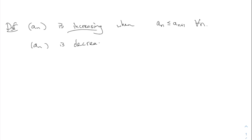Decreasing is similar: a_n is decreasing when a_n ≥ a_{n+1} for all n — each term is bigger than the one that follows it. If your sequence was just the same number repeated, that is both increasing and decreasing. A constant sequence is both increasing and decreasing. It's a little weird, but true — like how later we'll talk about sets that are both open and closed. These words don't always act the way you want them to.